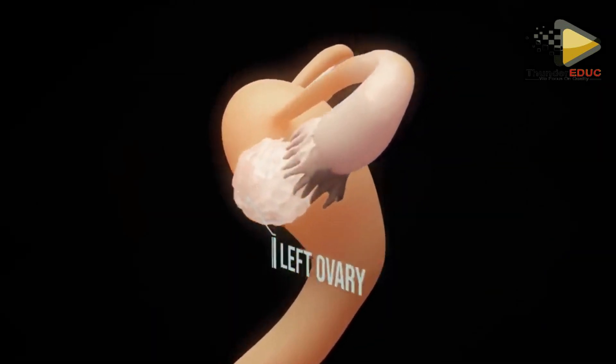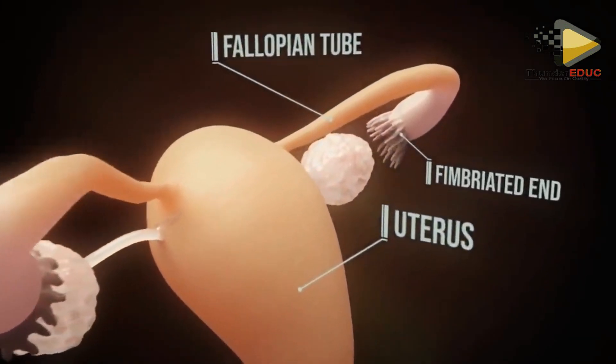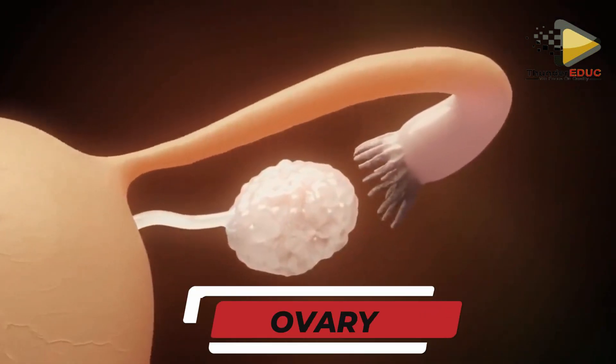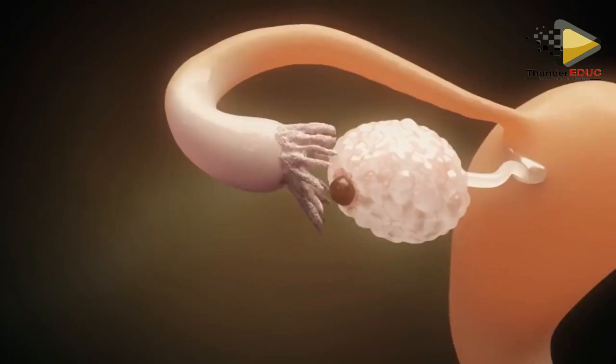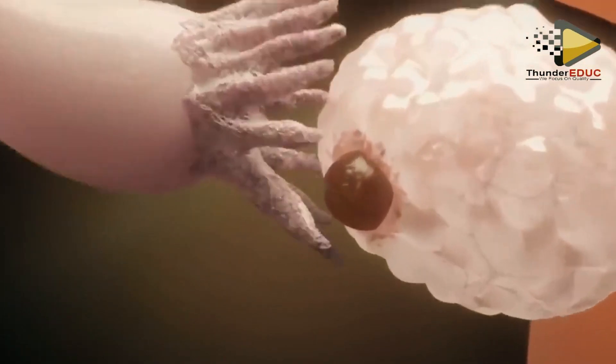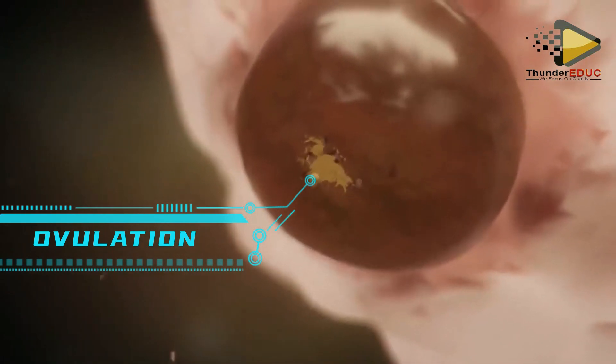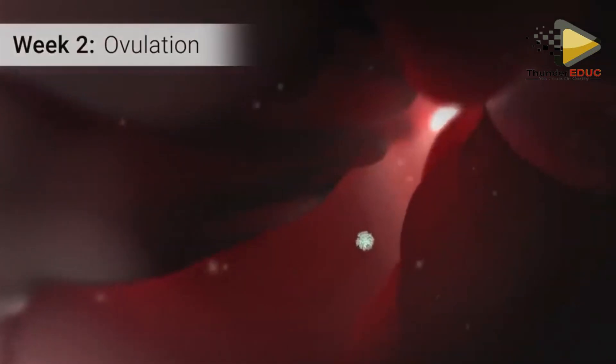The journey of humanity begins with the production of sperm and ova. Under the influence of luteinizing hormone, ovulation occurs.